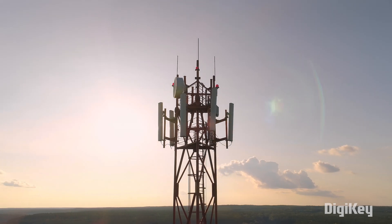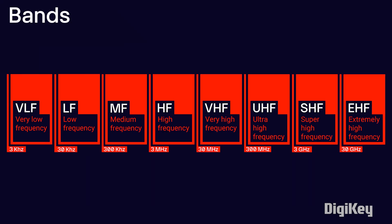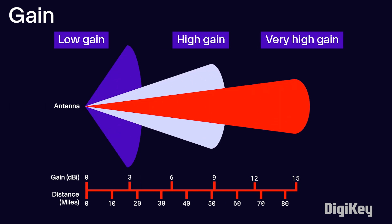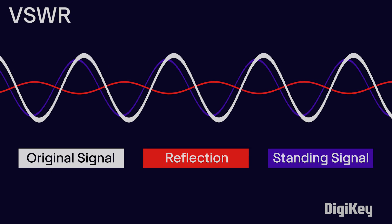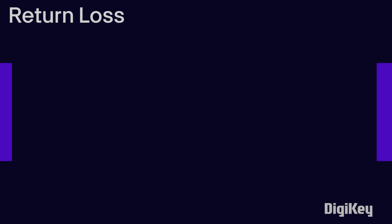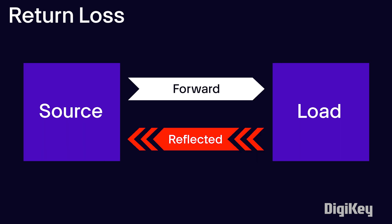Now let's cover some important terminology regarding antennas. Bands: the number of bands refers to the various frequency ranges the specific antenna has. Gain refers to how efficiently the antenna can transmit power in a specific direction. VSWR, or voltage standing wave ratio, measures how efficiently power is transmitted from the transmission source to the antenna or load. Return loss is the measurement of the original signal against the signal received, or basically how it interacts with its environment.